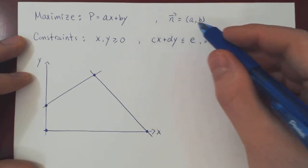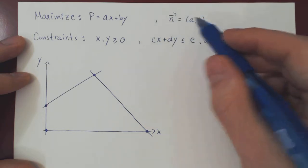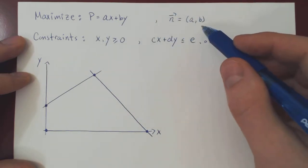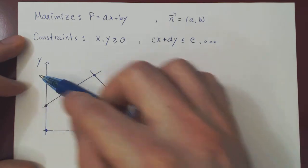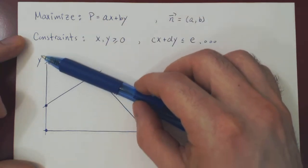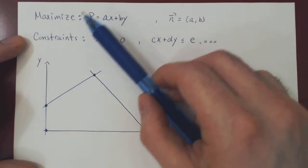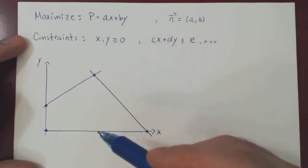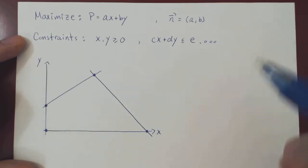The normal vector to our line — which defines the slope since it is perpendicular to the line — is independent of p. So you have a line with slope defined by the normal vector n, and as you increase p the line moves up, and as you decrease p the line moves down. Since we want to maximize p, we draw a line and simply move it up, and see when p is maximized — that is, how far can we take p so that the line still touches the feasible region. Let's do a few examples.